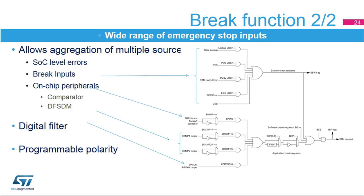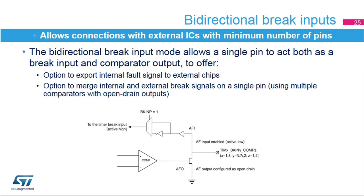External sources or on-chip comparator signals can be conditioned before entering the brake detection unit, allowing selection of proper polarity and discarding of spurious glitches by means of a digital filter. Besides regular digital brake inputs and internal brake events from comparators, timers 1 and 8 feature bidirectional brake inputs and outputs combining the two sources. These pins combine the comparator output configured as open drain and the timer's brake inputs. With a single pin, they allow global brake information to be available to external MCUs or external gate drivers. This also provides the option to have an internal comparator and multiple external open drain comparator outputs ORed together to trigger a brake event.